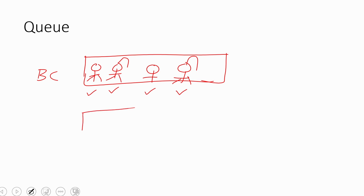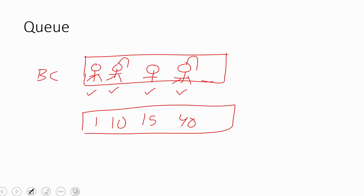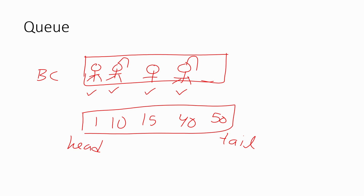If you have a set of elements like 1, 10, 15, 40, you will insert the elements at the tail and remove the elements from the head. Suppose you are adding one more element — that element you will add at the tail. If you use the remove method, the element will be removed from the head, because that is the first element that was inserted into the queue.